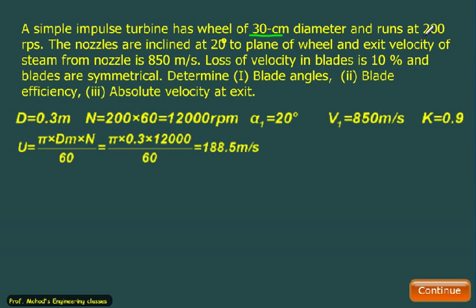The speed is 200 rps, so we will multiply by 60, that is 12,000 rpm. Nozzle is inclined at 20 degrees, so alpha_1 is 20, and the exit velocity of the steam is 850, so V_1 equals 850. There is a loss of friction, loss of velocity due to friction is 10%, so that is K equal to 0.9, which is Vr_2 by Vr_1.